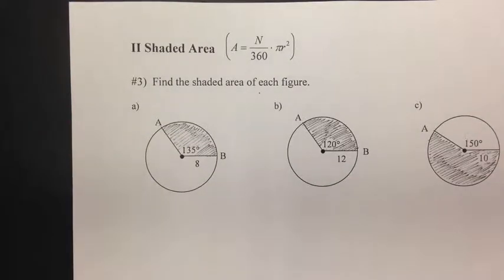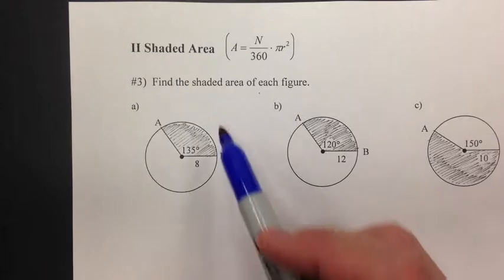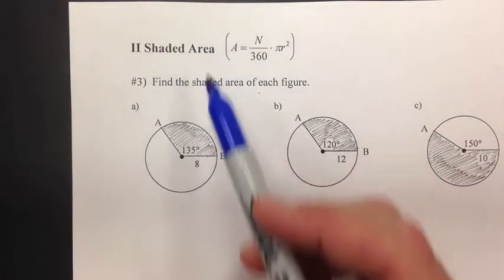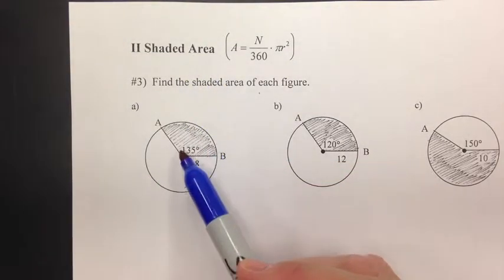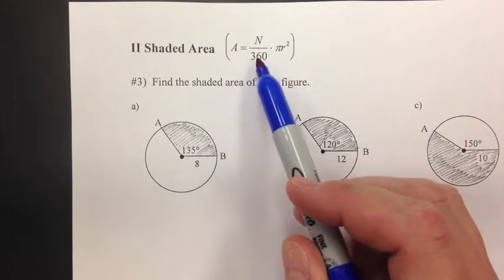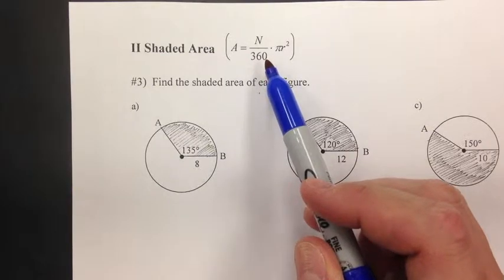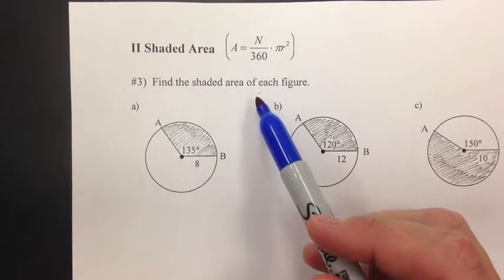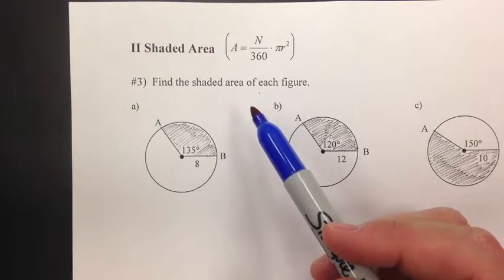Okay, here we go — we're back with part two, the second side of the notes. Let's take what we've just been doing and apply that to finding the actual shaded area of a figure. Not just the fraction being shaded, but what's the actual area. There's a little formula up here that I'll explain in a minute. Find the shaded area of each figure.